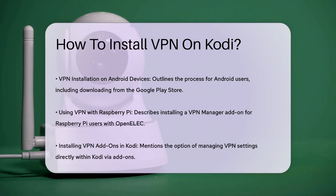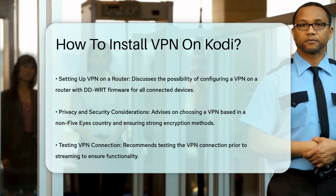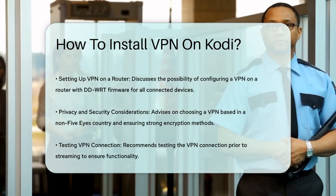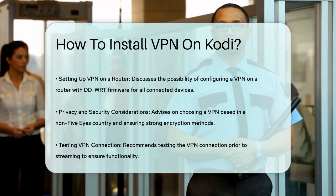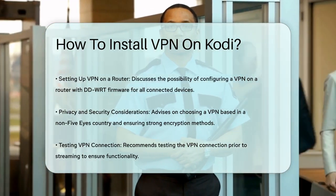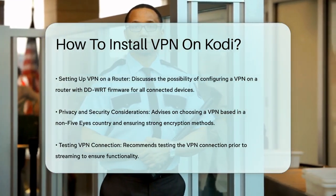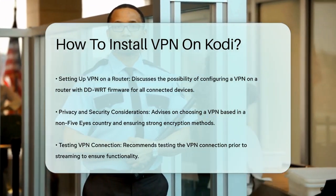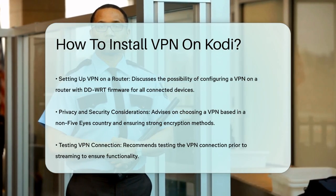If you have a router with DDWRT firmware, you can set up the VPN on the router itself. This way, all devices connected to the router, including Kodi, will have their traffic encrypted. However, this setup can be more complicated and depends on your router's make and model.